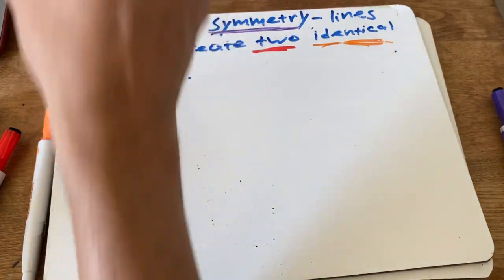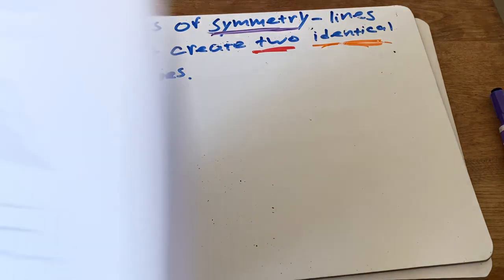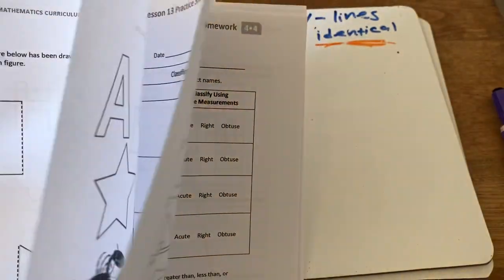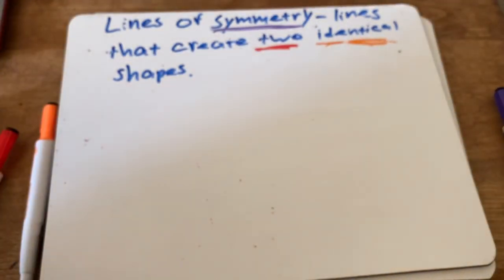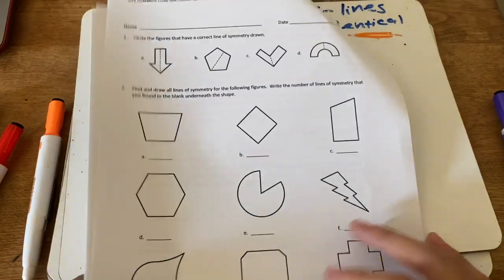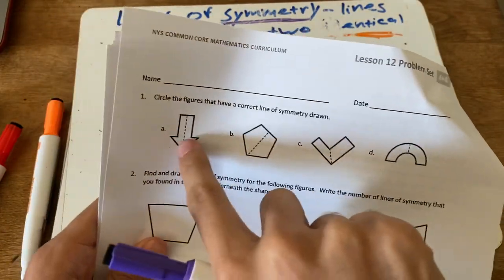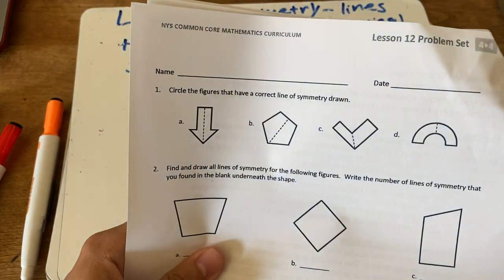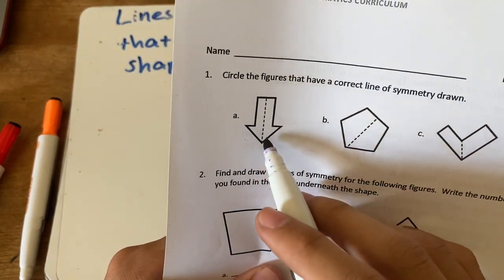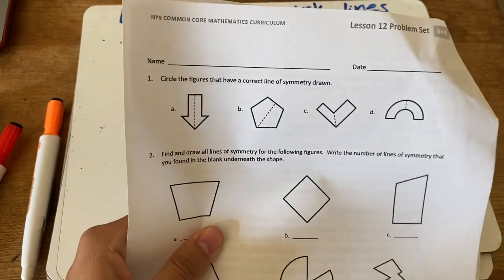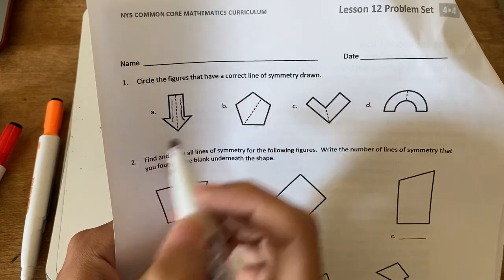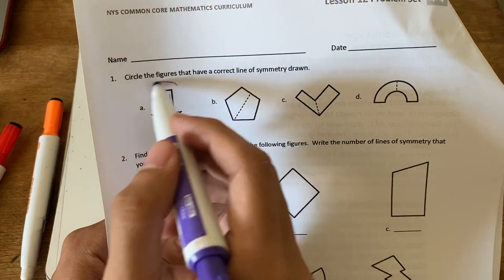Let's take a look at your worksheet — you should be on lesson 12 and have three pages. Let's look at page 194. Number one says: circle the figures that have a correct line of symmetry drawn. For part A, the line of symmetry is drawn straight down the middle of the arrow. Is this side the same shape and size as the other side? Yes, so this is correct.